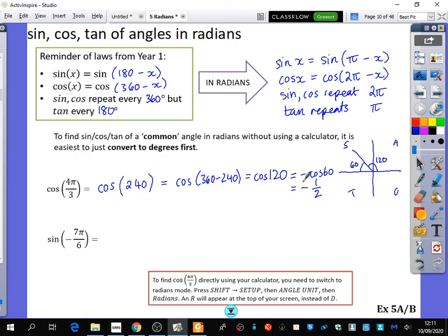And then you'll notice along the top of your page there will be a little R that's in a box if you're in radians mode. If you want to go back to degrees mode, there will be a D for degrees along the top of it as well, the top of your page, the top of your screen.